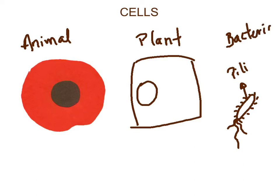Let's look at the most evident feature you can see right now. You know what I'm talking about — I'm talking about the nucleus. These two cells, animal and plant cells, they have a nucleus. But what about this bacteria? Bacteria doesn't have a nucleus.